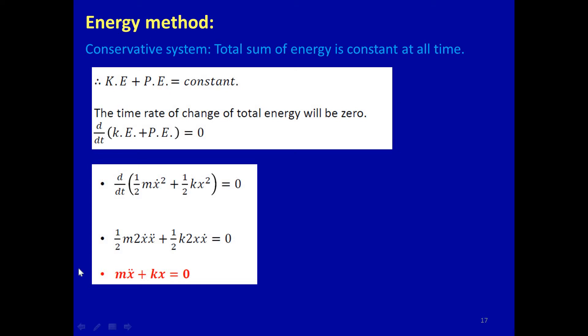Good morning everyone. Today we will see the next part of structural dynamics, that is the energy methods. This is a conservative system in which the total sum of energy is constant at all times. The total kinetic energy and potential energy, when summed, form a constant. Therefore, the time rate of change of total energy will be zero, so d/dt of kinetic and potential energy equals zero.